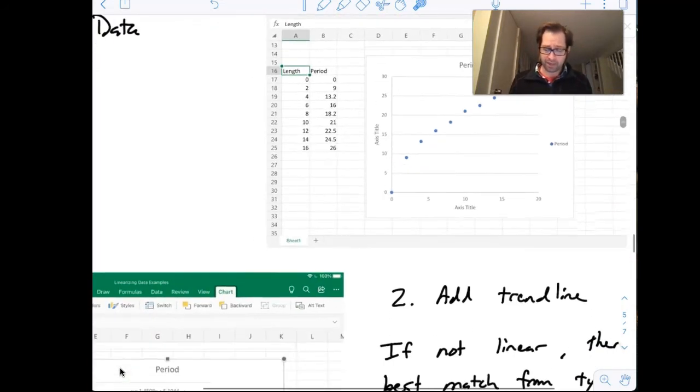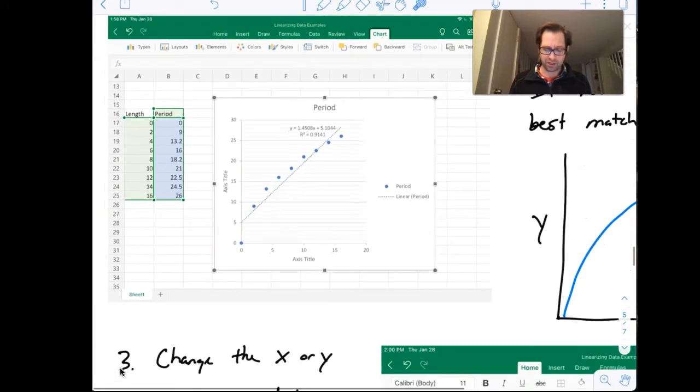So I'm going to try that. I'm going to go to my trend line. And just like before, I'm going to add an equation and I'm going to look for a linear match. This r value is not very strong though. And it doesn't make sense really to have my intercept be at this point, because if my length is zero, that would mean my period is about five. And that just physically doesn't make sense. So there might be a better match.